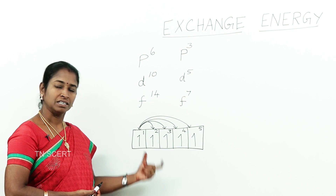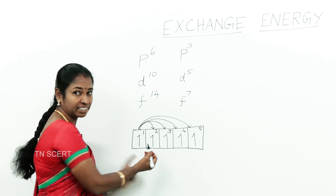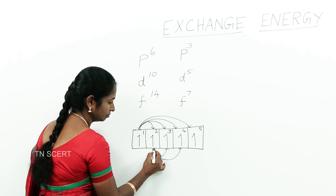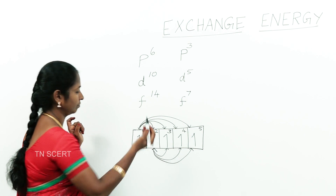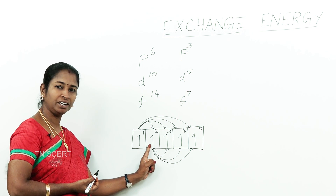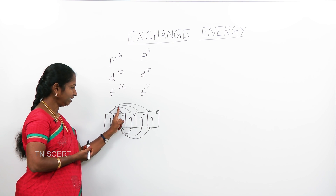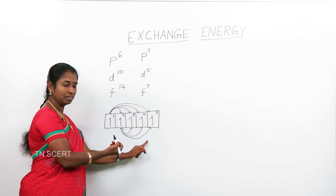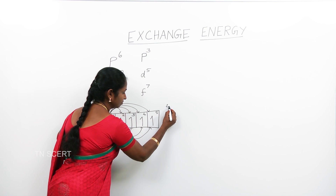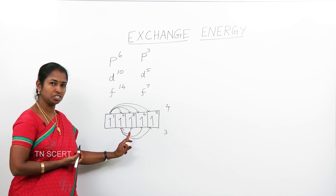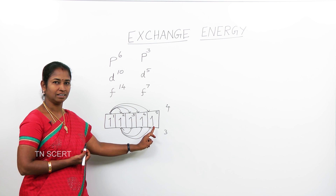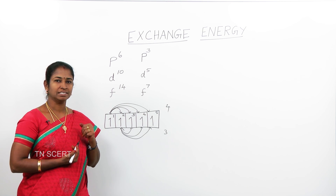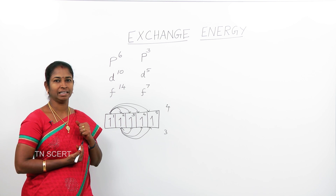In the same way, the 2nd electron can exchange its position with the 3rd, 4th, or 5th electron. Note that the exchange between 2nd and 1st is not counted again, as it was already accounted for — giving 3 probabilities for the 2nd electron and 4 for the 1st. If the number of exchanges is more, more energy is released, the energy of the orbital becomes less, and hence half-filled configurations are more stable than partially filled configurations.